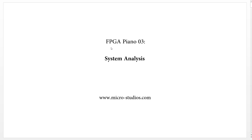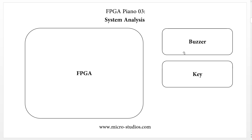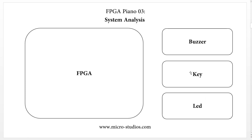For this project, of course we will have one FPGA. We have one buzzer. Next we will have seven keys. We also have one LED on the board. This LED will show whether a key is pressed or not — when we press any one of the keys, this LED will turn on.